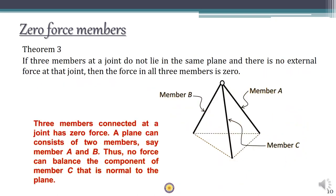The third theorem states that if three members meet at a joint, none of them lie in a common plane, and there is no external load acting at that joint, then the member force in each of those three members is going to be zero.